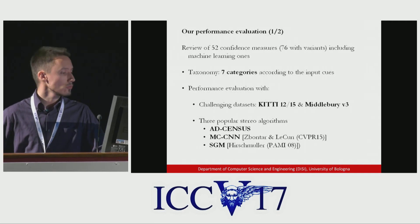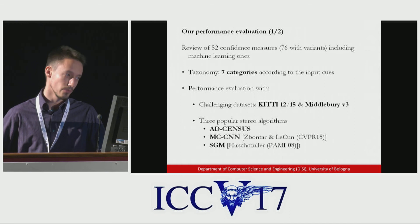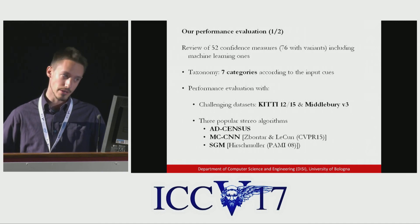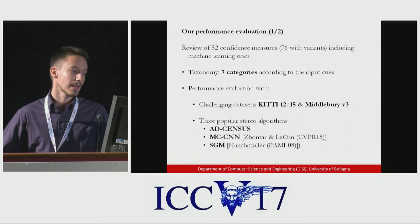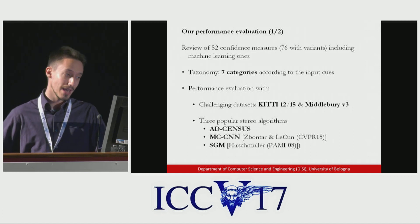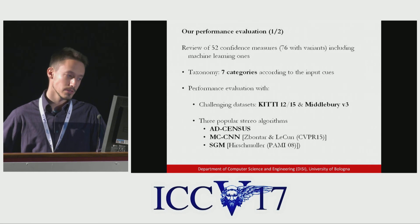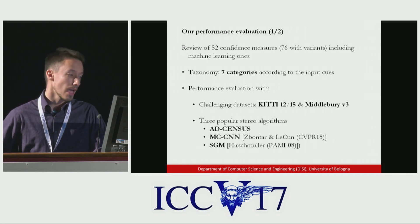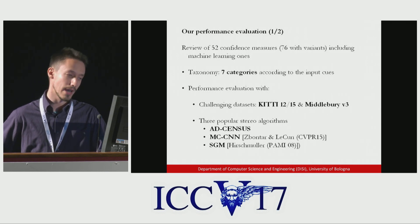For this reason, we propose a new evaluation and review of confidence measures. In particular, we consider 52 confidence measures — actually 76, considering some variants of them. We categorize them into seven classes according to the input cues each of them processes, and we evaluate their performance on the three most popular stereo benchmarks: KITTI 12 and 15, and Middlebury V3, using three popular stereo algorithms: AD census, MC-CNN, and the semi-global matching algorithm.